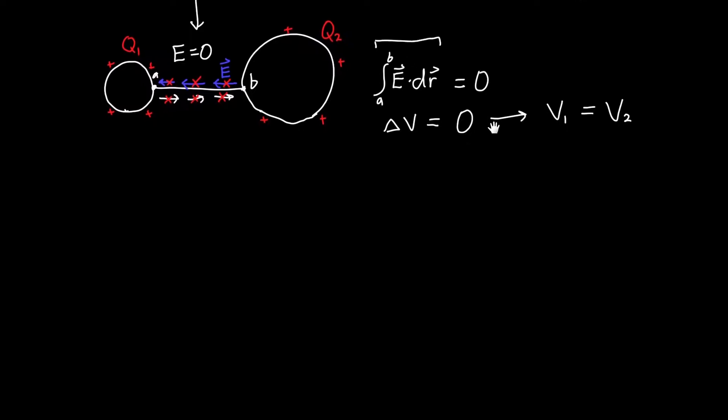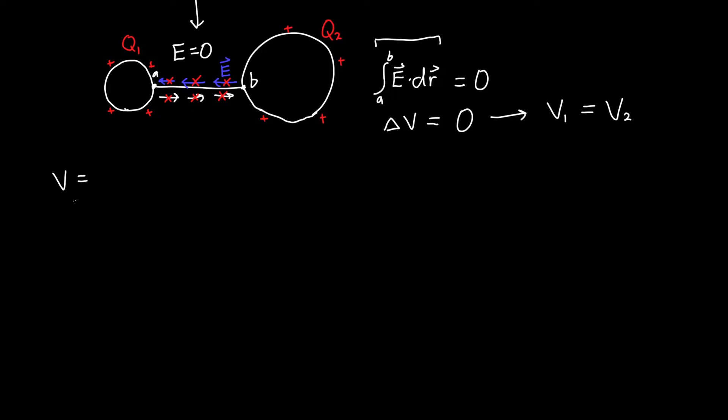The potential for an arbitrary spherical distribution of charge outside that distribution is just k, Coulomb's constant, times the charge on that sphere divided by the distance from the center. V1, the potential on the surface, is k times Q1 divided by R1. Similarly, V2 is k times Q2 divided by R2. If we set these equal, the k's cancel out, and we get Q1 over R1 equals Q2 over R2.